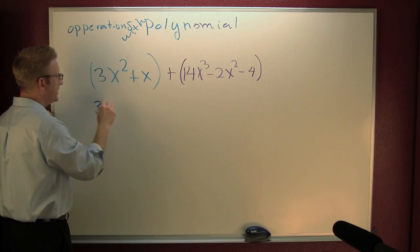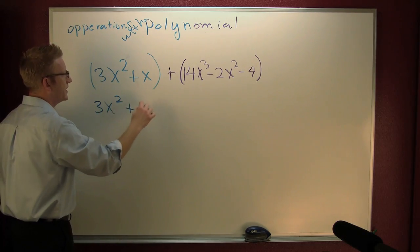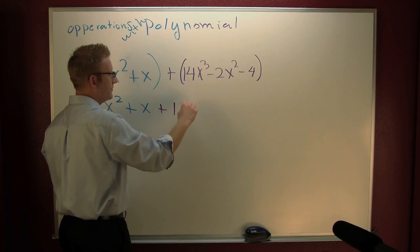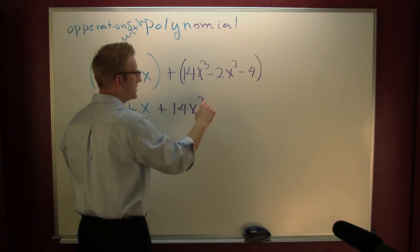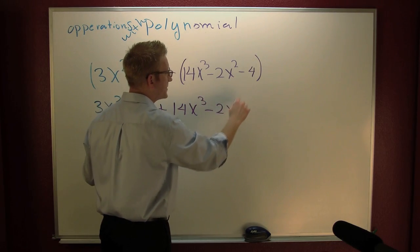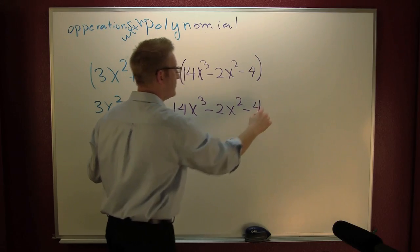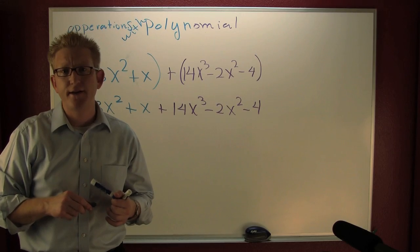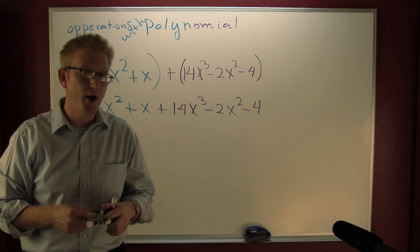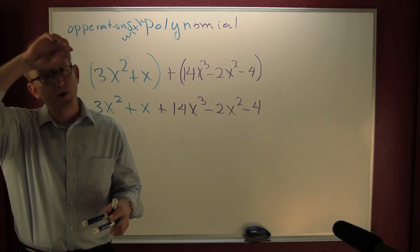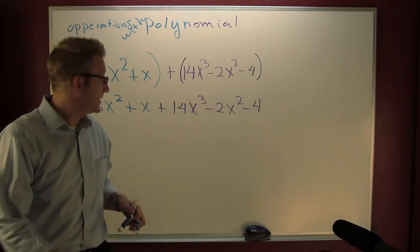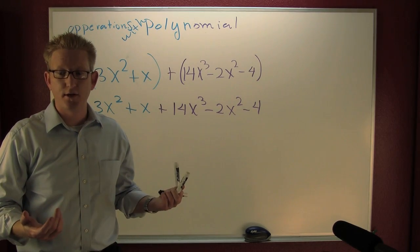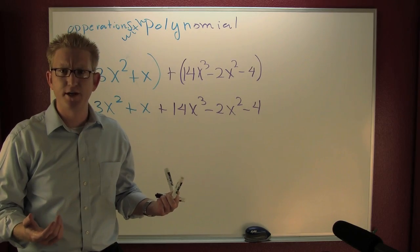So now I got 3x squared plus x plus 14x to the third minus 2x squared minus 4. Now we want to gather, collect, and combine. We're trying to combine some like terms. We just turned this into simplifying algebraic expressions.